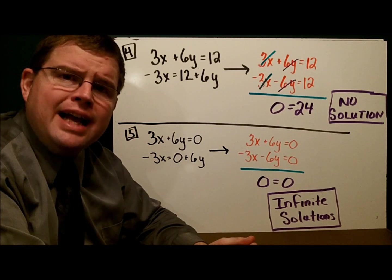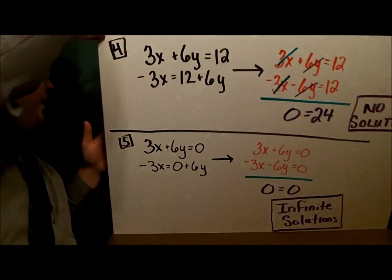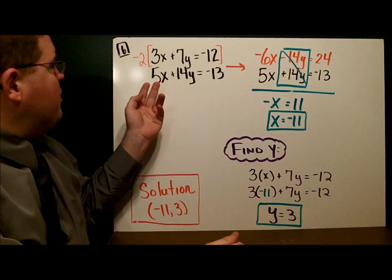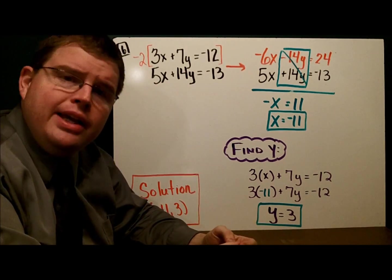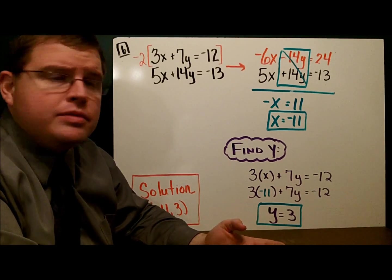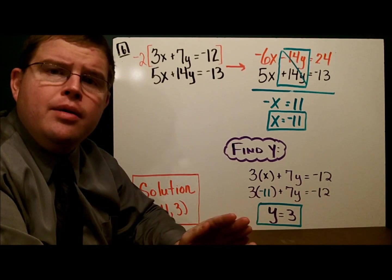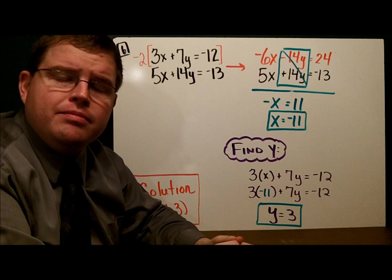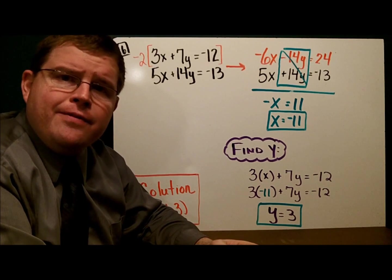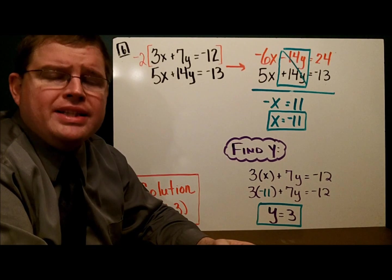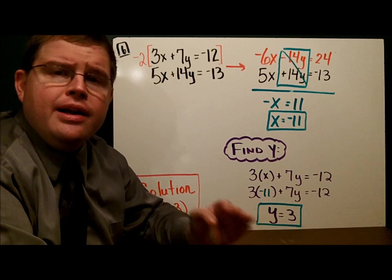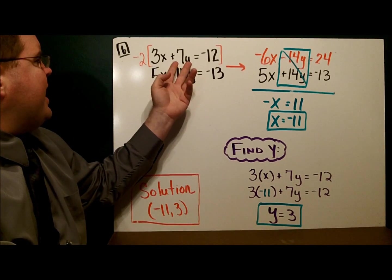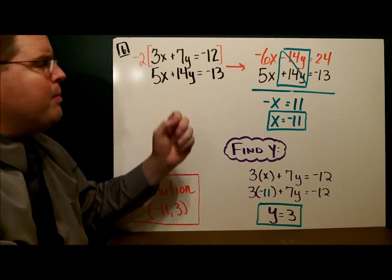Now, we're going to continue into the next section. Here, we're given 3x plus 7y equals negative 12. We're also given 5x plus 14y equals negative 13. Our equations are in standard form, but notice that nothing is opposite. We have a 3 and a 5, a 7 and a 14. You can approach this many different ways. Remember, the goal is to get opposite variables.